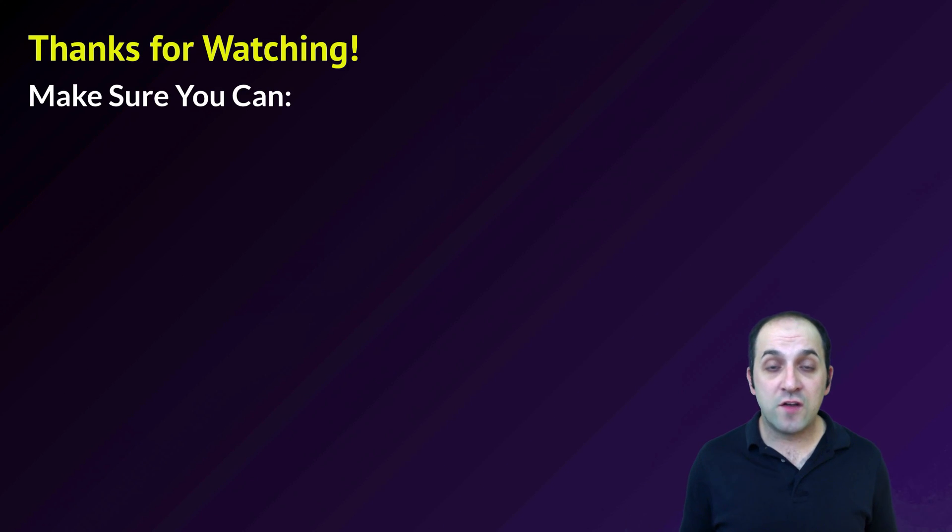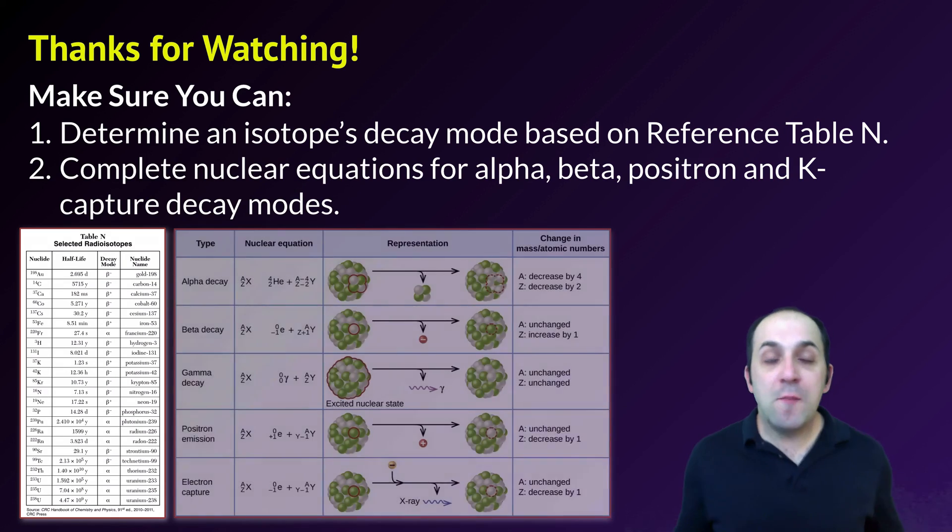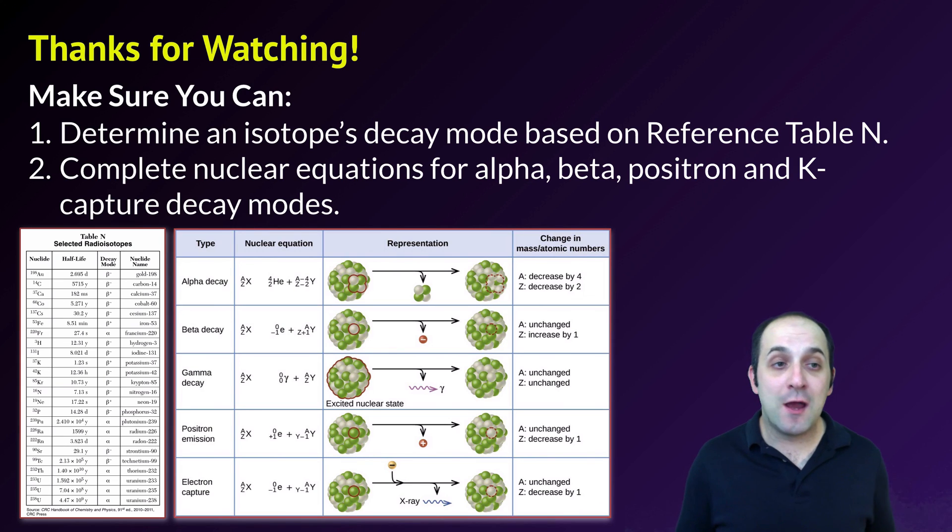Thanks so much for watching our discussion of how to represent nuclear decay through decay equations. Make sure you can determine an isotope's decay mode based on reference table N. Can you go to reference table N and use it to figure out what the decay mode is? Also make sure you can complete nuclear equations for alpha, beta, positron, and K-capture decay modes. If you can do all these things, you're doing great. If not, write down any questions. You can leave them in the comments below the video or get in touch with me through the info field. Thanks again for watching, I really appreciate it. Have a great day.